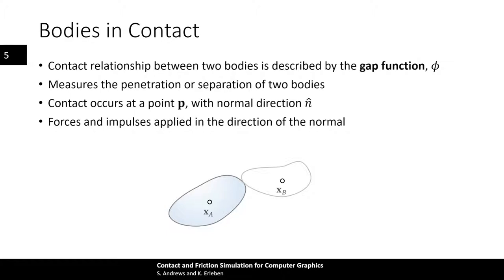We introduce the gap function, a scalar value that tells us the amount of separation or penetration between two bodies. In the figure shown here, the gap function has a value of zero since the two bodies are exactly touching at a point on their surfaces without any overlap. The point at which the bodies touch is called the contact point. If the surfaces of both bodies are smooth, there will be a direction perpendicular to both surfaces called the contact normal, which defines a plane helpful for describing the kinematics and dynamics of the bodies during contact. The contact normal is also the direction in which we push to maintain a penetration-free configuration.